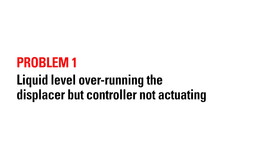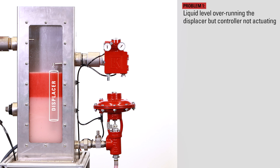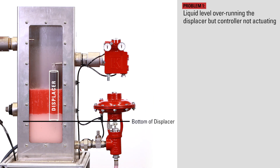When the liquid level reaches its set point, either at the top of the span or the bottom of the span, the controller should actuate, meaning it sends an output signal or vent. The controller should actuate somewhere along the length of the displacer. If the liquid level goes beyond the top of the displacer but the controller hasn't actuated, or if the liquid level drops below the bottom of the displacer and the controller hasn't actuated, this is a problem.